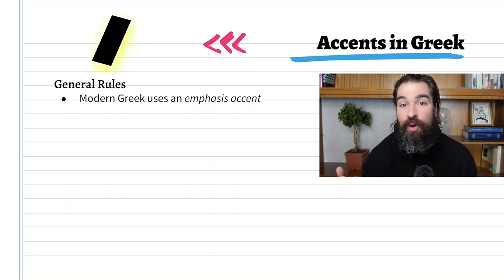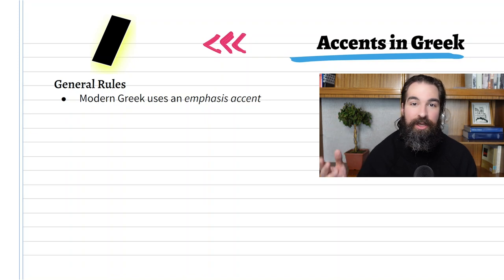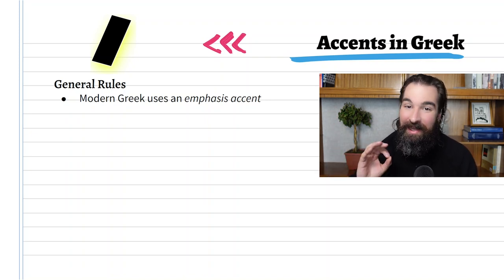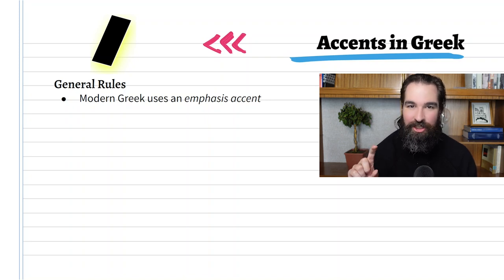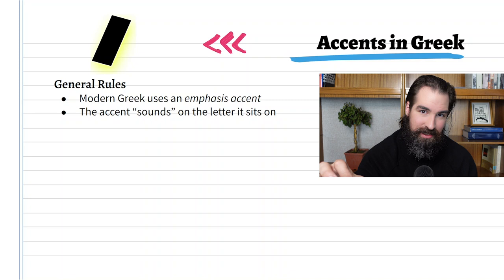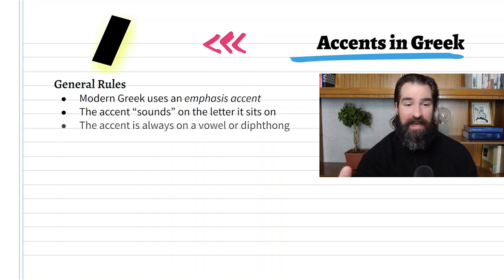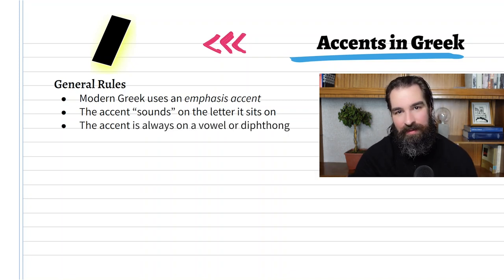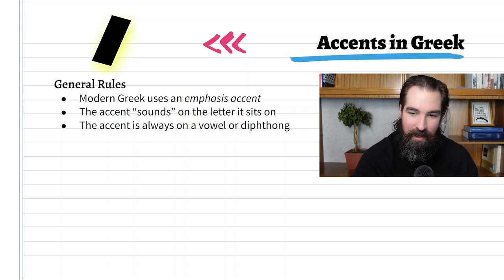Some languages have other sorts of accents. One example is a tonal accent. A tonal accent would mean you change your pitch — you might rise in pitch or go down in pitch. But this accent in Greek is emphasis only; it changes the volume. That's actually what happens in English. The accent always sounds over the letter that it sits on, and it also always happens to be found over a vowel or a diphthong — a set of vowels.